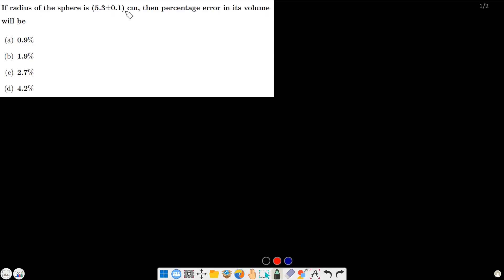If the radius of the sphere is 5.3 plus minus 0.1 centimeter, then percentage error in its volume will be calculated. So radius with its error: r plus minus del r, where r = 5.3 centimeter and the error is plus minus 0.1 centimeter.